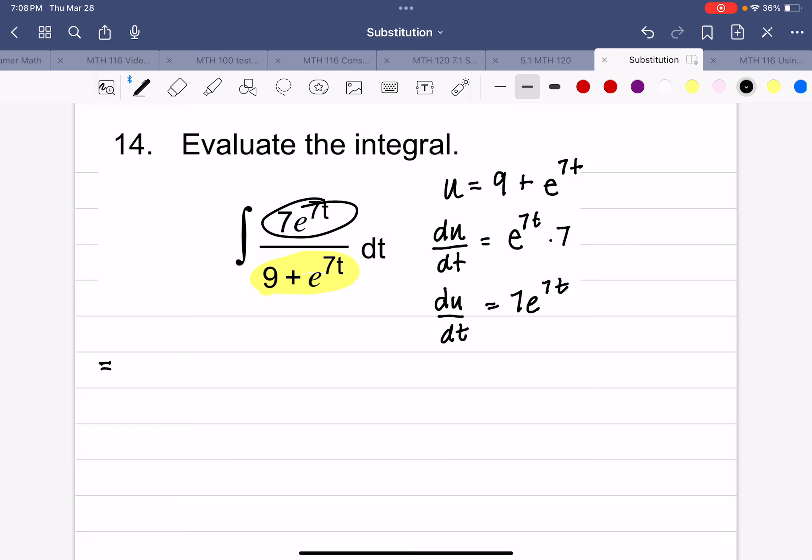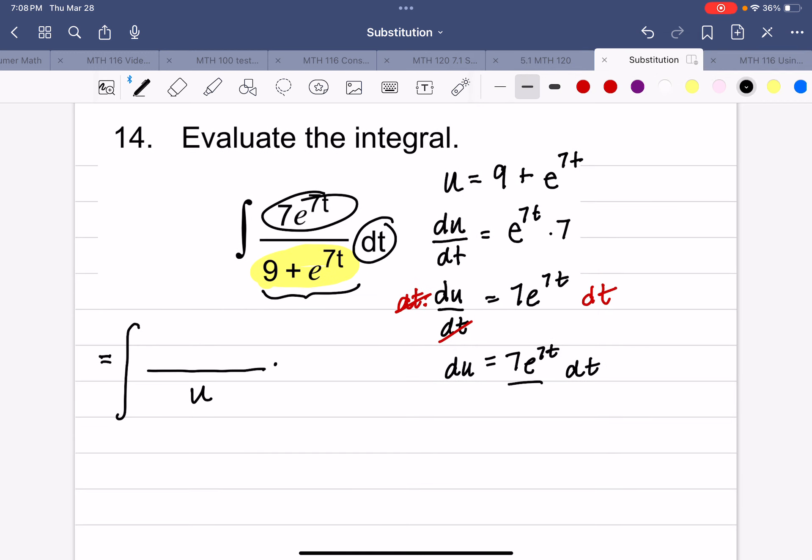Let's substitute what we know. So this whole thing was my u, and for my dt, well, I need to solve this for dt. So du is 7e^(7t) times dt. I'm going to divide both sides by 7e^(7t). And that's what I want to put in for dt.